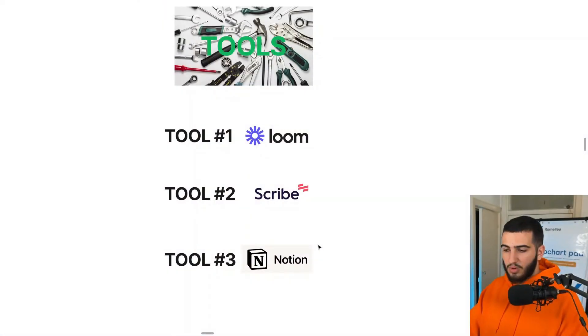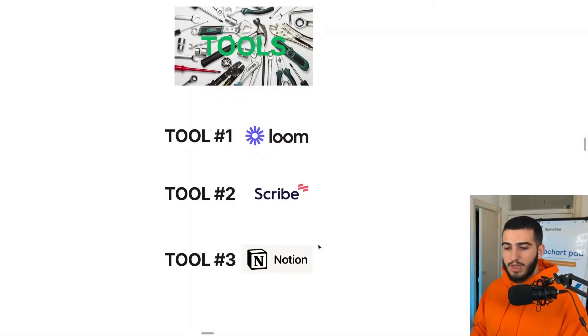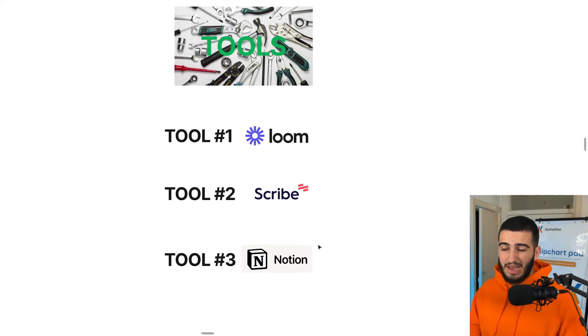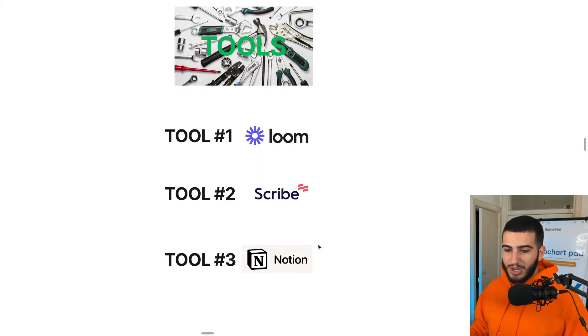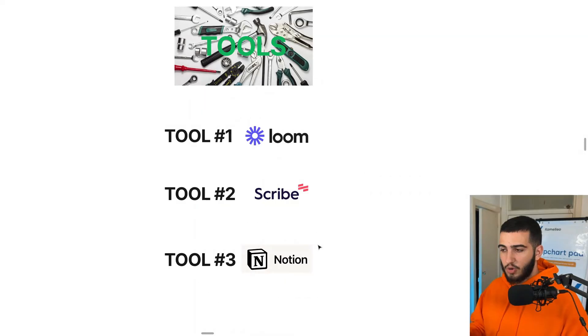The third tool is Notion. I've used it for over two years, and one massive use case — used by multi-million pound companies and startups — is as a hub to collect different information. I recommend storing all your SOPs on Notion where you can easily categorize them into different departments, share them with specific people, and give everyone a clear place to access what they need. It doesn't matter if you use Notion or something like Asana, but it's very important you have a clear place to store and share these different SOPs across your team.